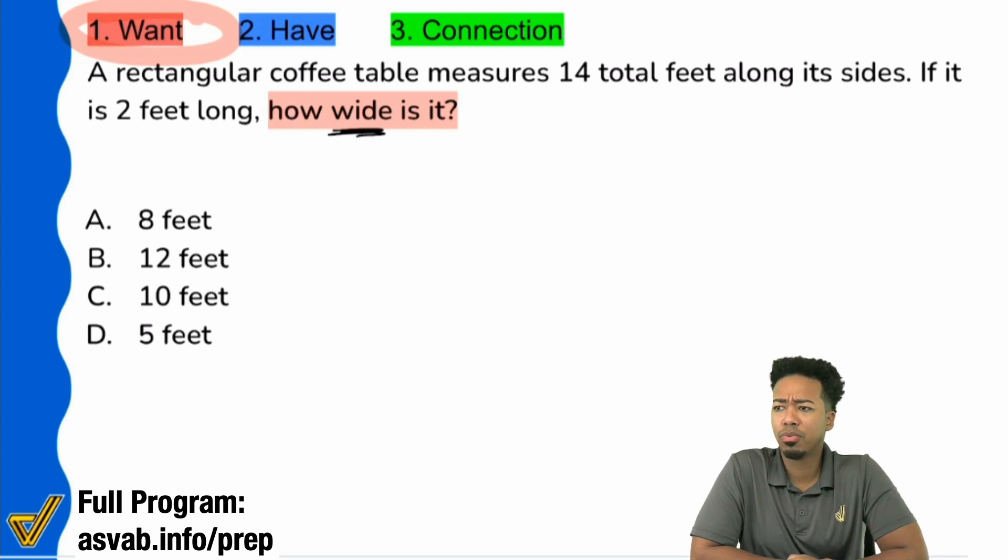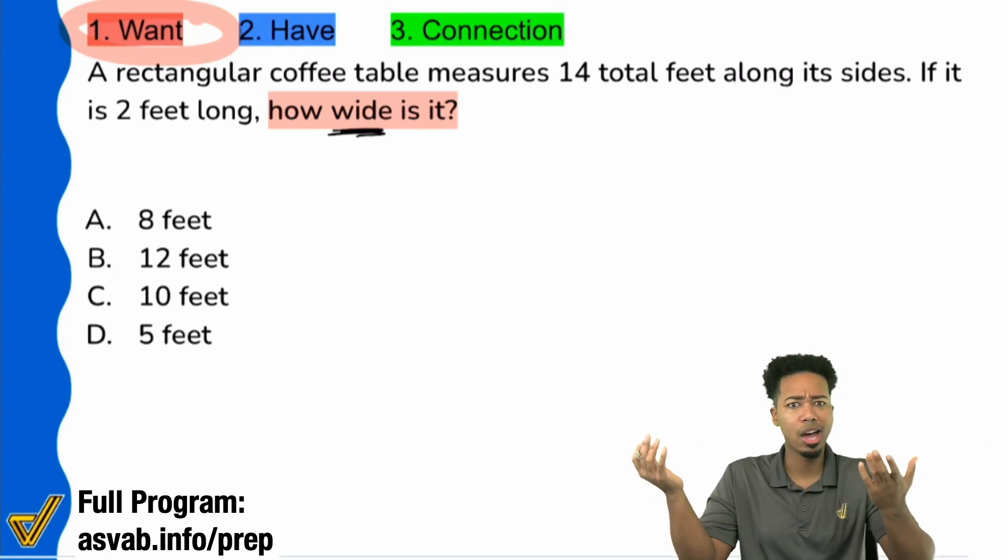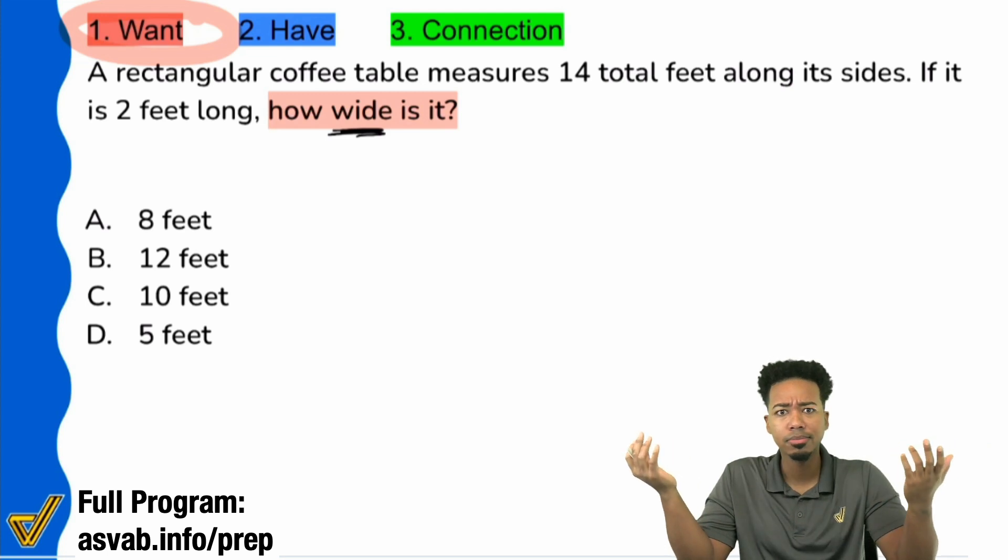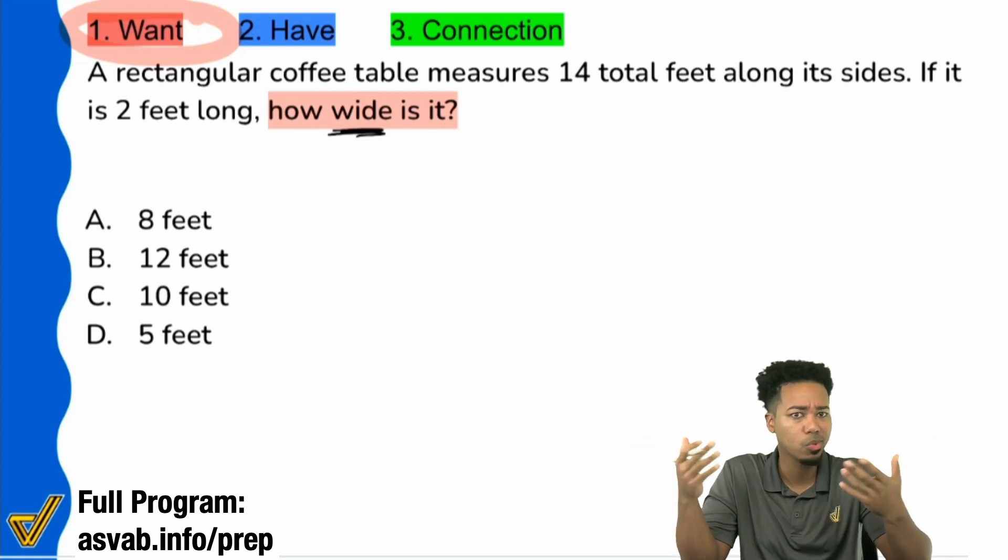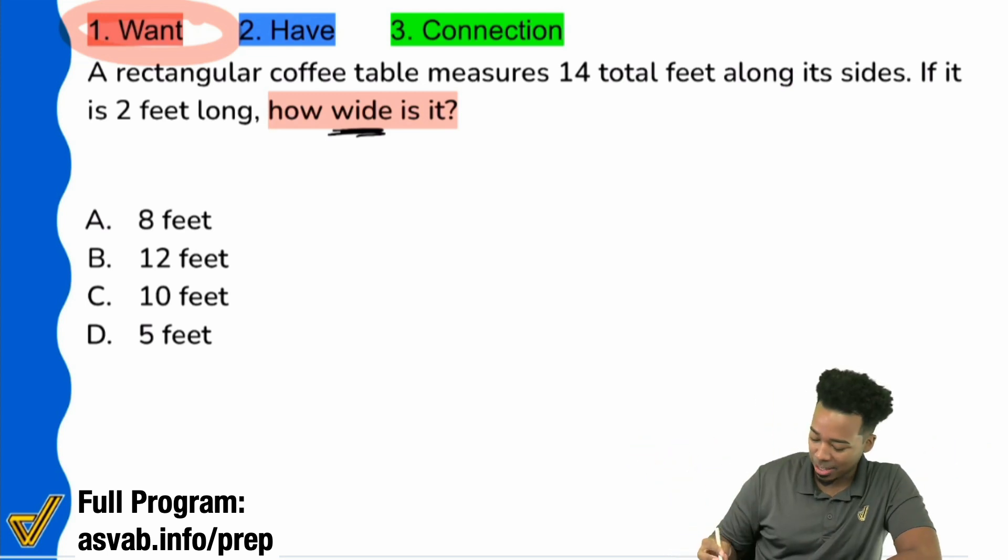Now just think about that for a second. When you think about the phrasing of being how wide something is, typically we're talking about a shape in math talk. It could be a square, rectangle, triangle, parallelogram, something, but typically we're dealing with a shape. And so your next question is how wide is what? How wide is a piece of paper? How wide is a rectangle? What are we talking about?